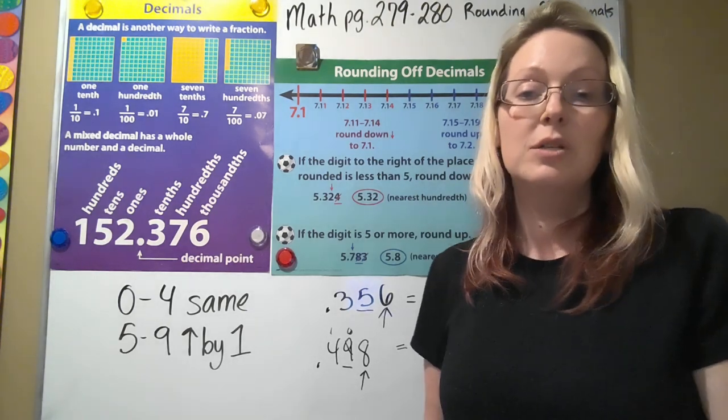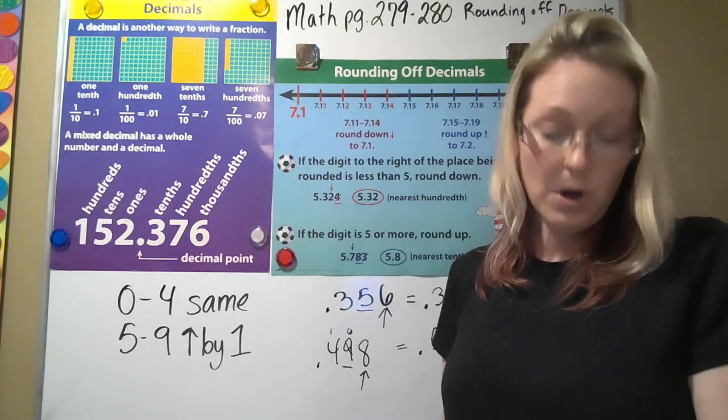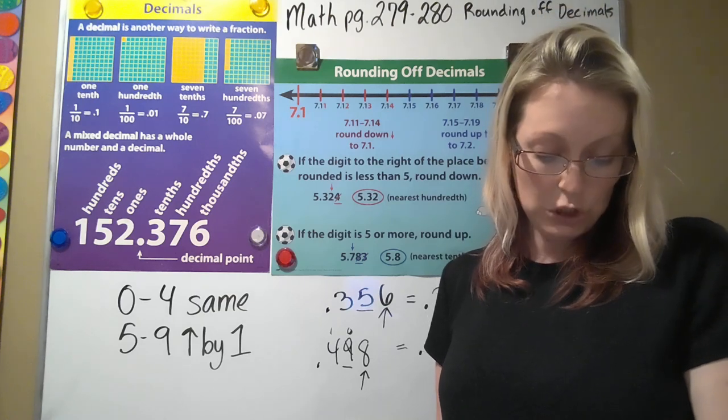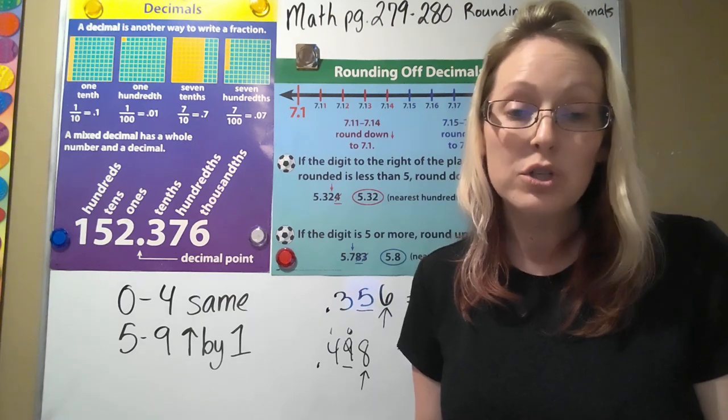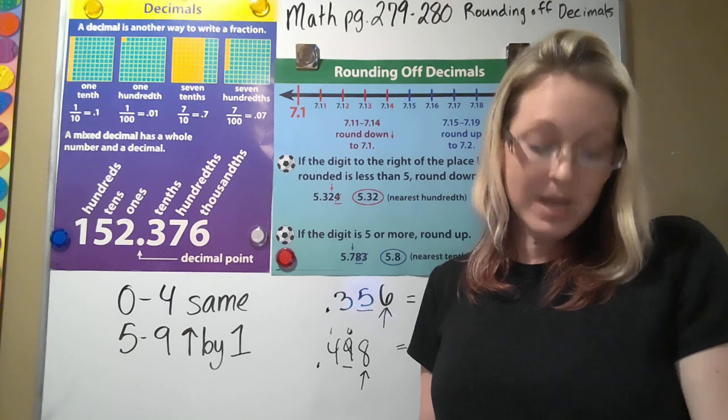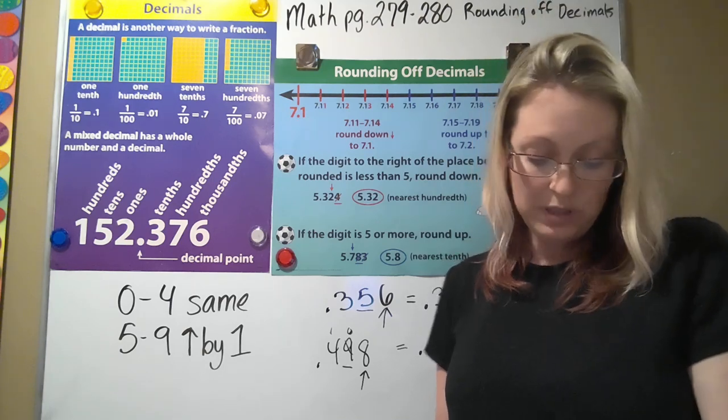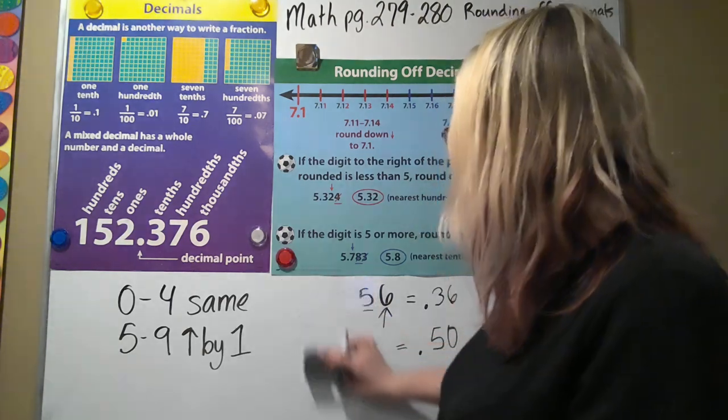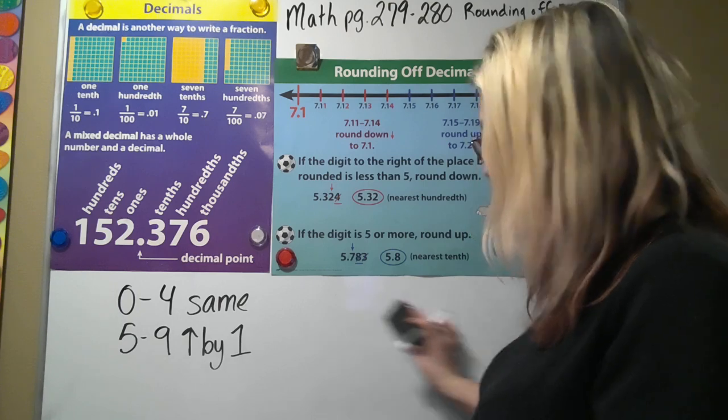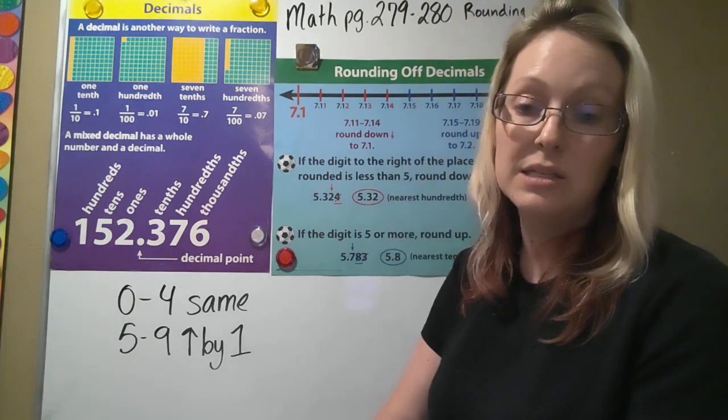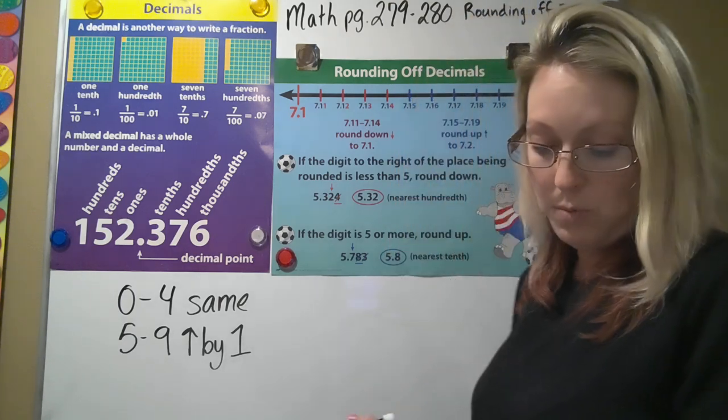So you guys are going to be rounding decimals today. You are doing numbers one and two. I also want you to do number three, which is divide and check with decimals. It is adding the decimal place. Remember the same problems that we did yesterday.